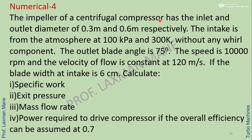Next numerical: the impeller of a centrifugal compressor has inlet and outlet diameters of 0.3 m and 0.6 m respectively. Intake is from atmosphere at 100 kPa and 300 Kelvin without any whirl component. The outlet blade angle is 75 degrees. Speed is 10,000 RPM and flow velocity is constant at 120 m/s. Blade width at intake is 6 cm. Calculate specific work, exit pressure, mass flow rate, and power required to drive the compressor if overall efficiency is 0.7.